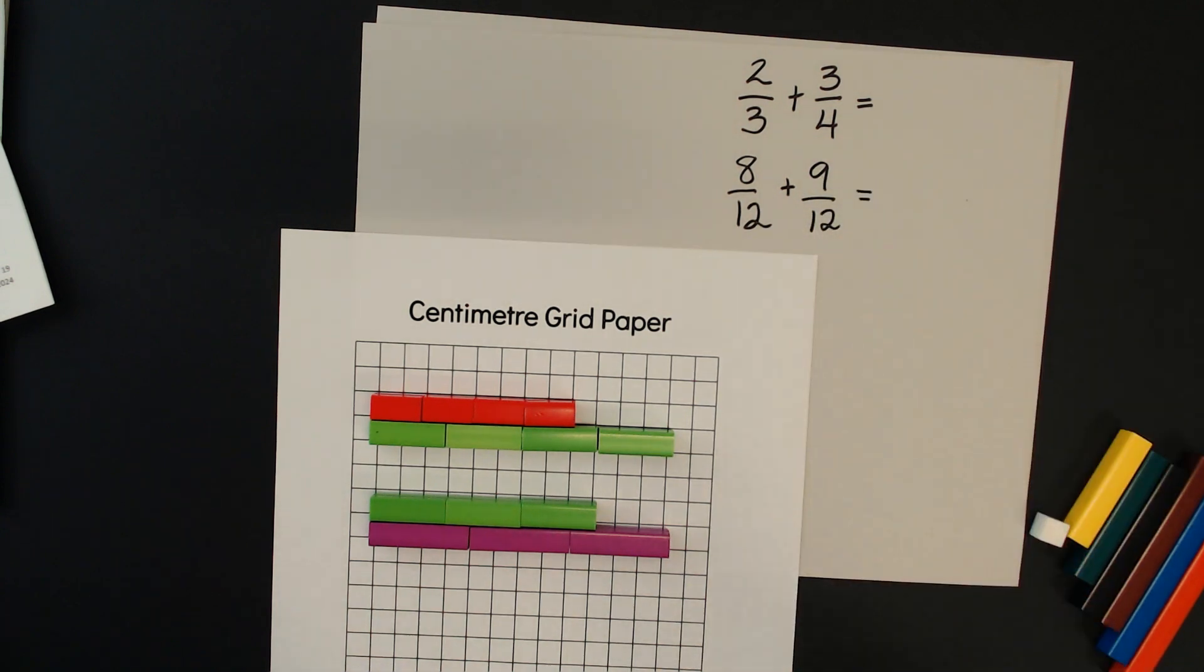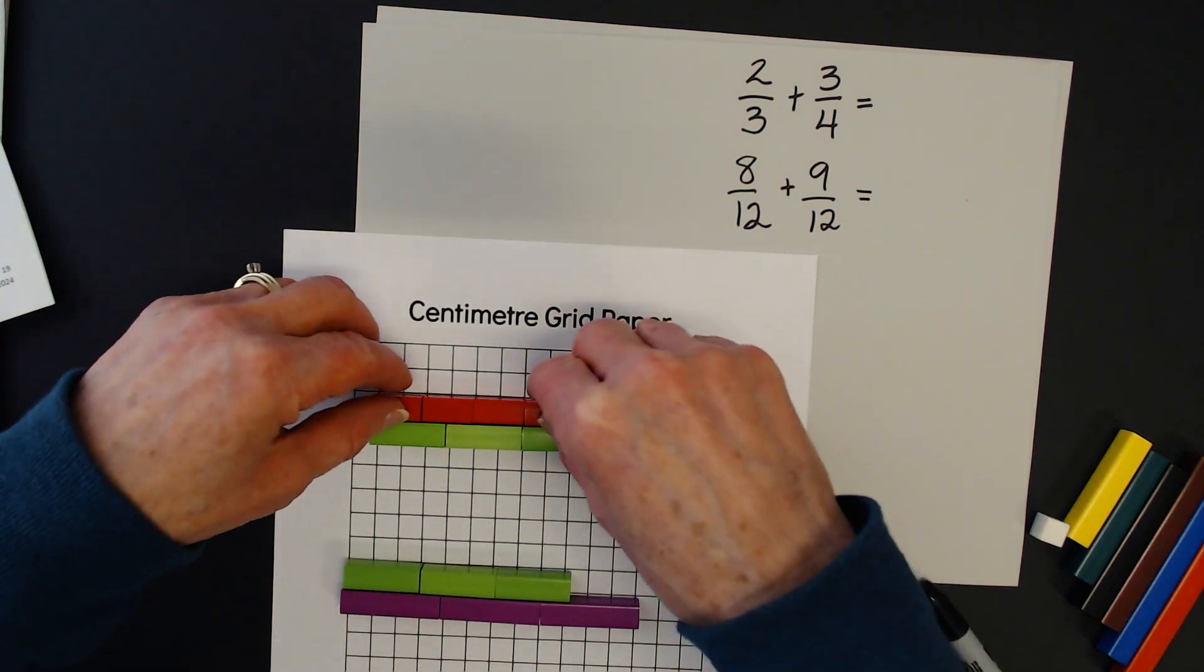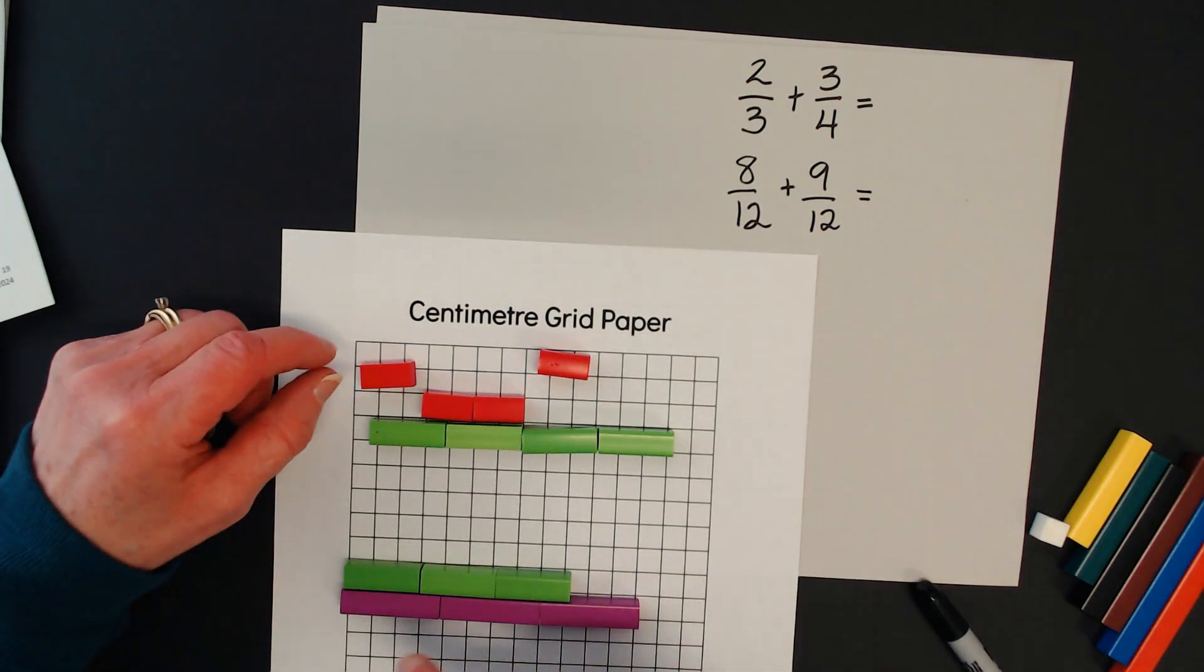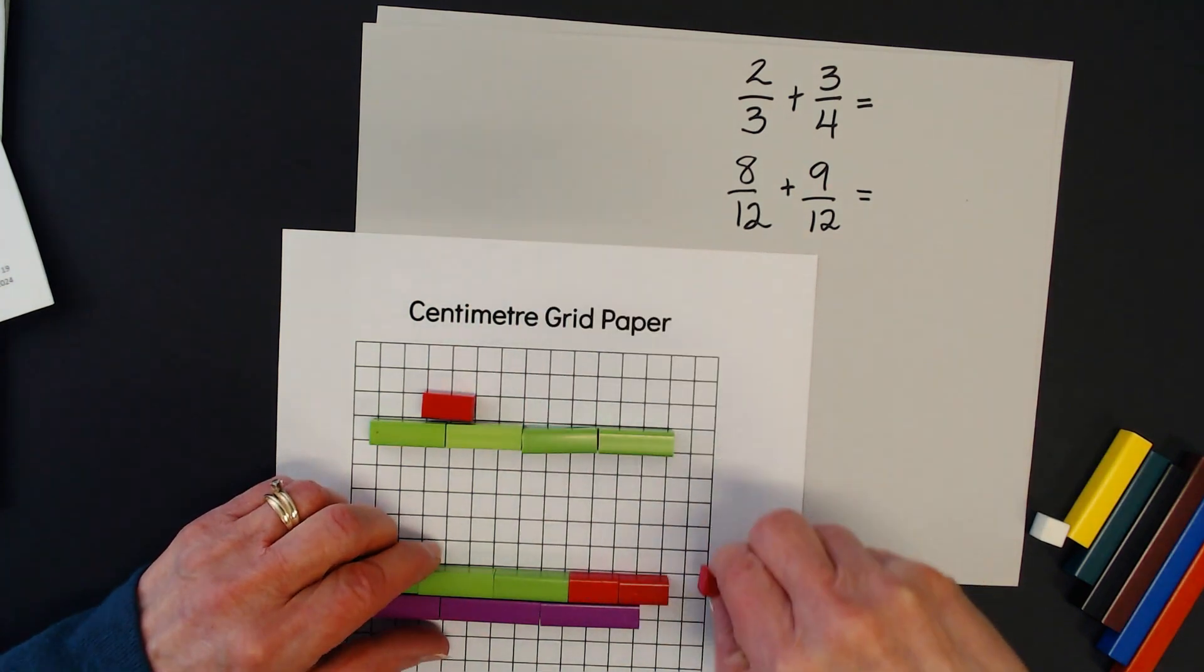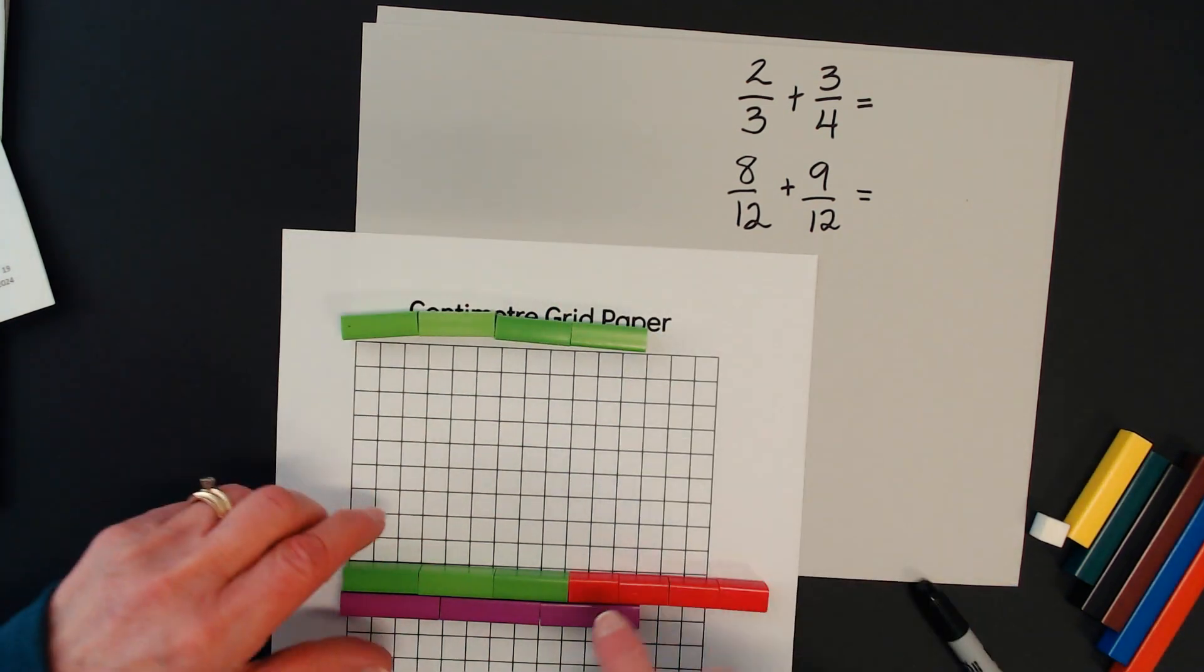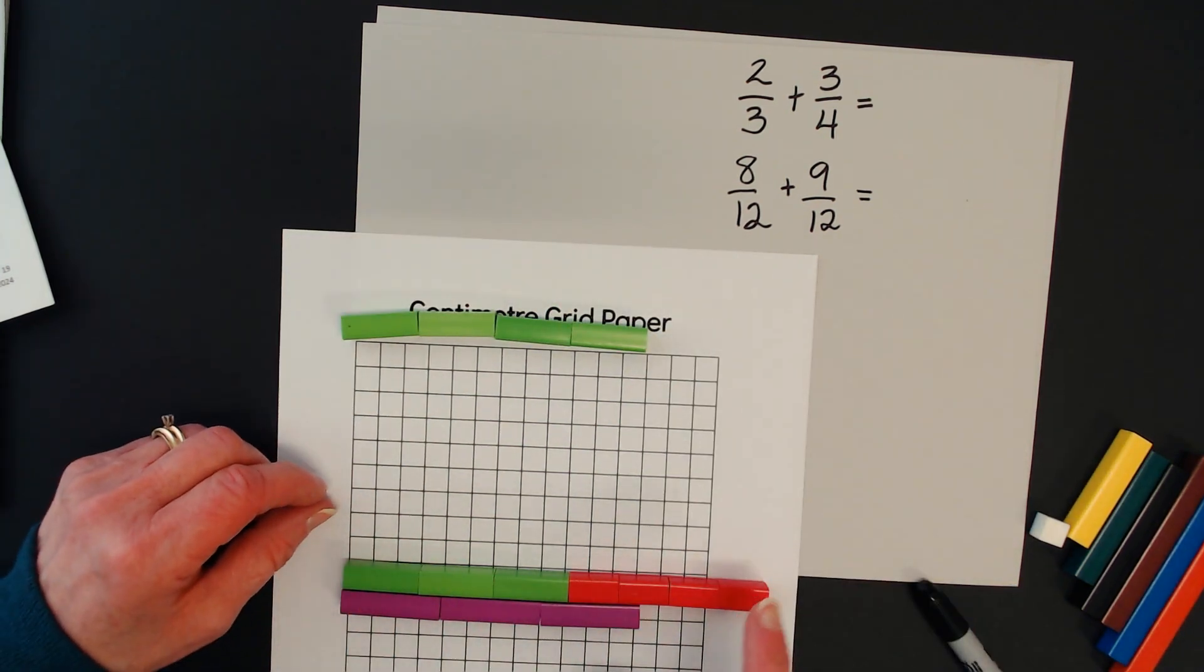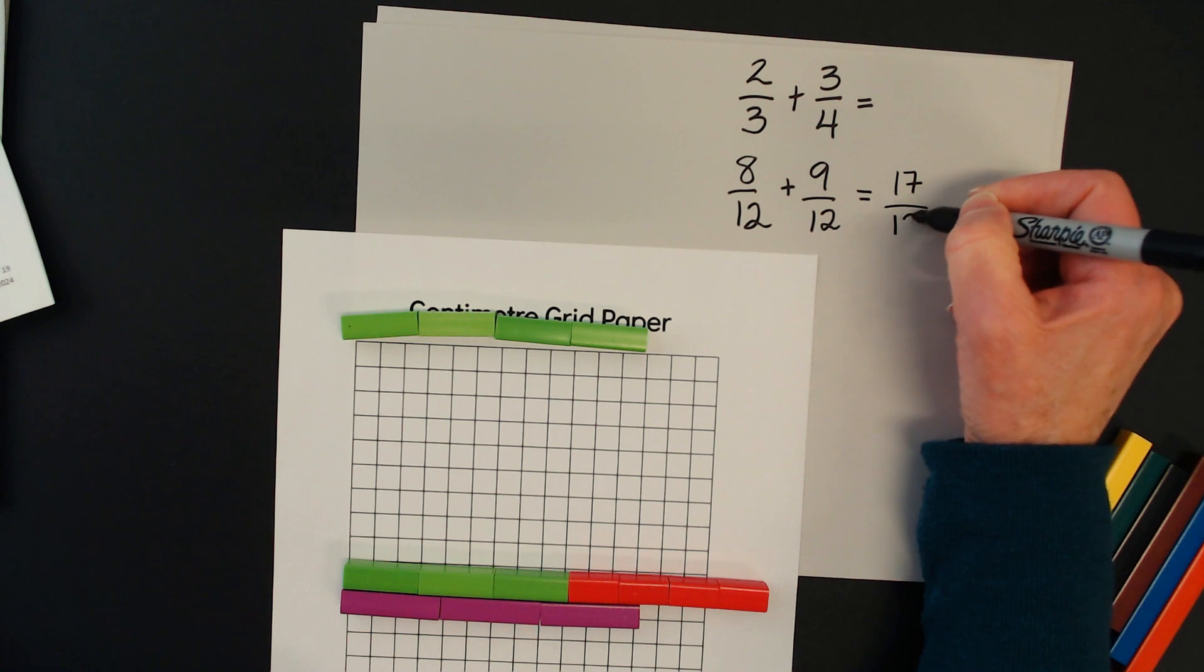And now I'm ready to add them together. So I'm going to take this and just move it down here. Both of these are twelfths. So I'm just going to take these blocks representing my numerator and put them down here. So now I can count these together. I have three, six, nine, and another two is eleven, thirteen, fifteen, seventeen. So I have seventeen twelfths.